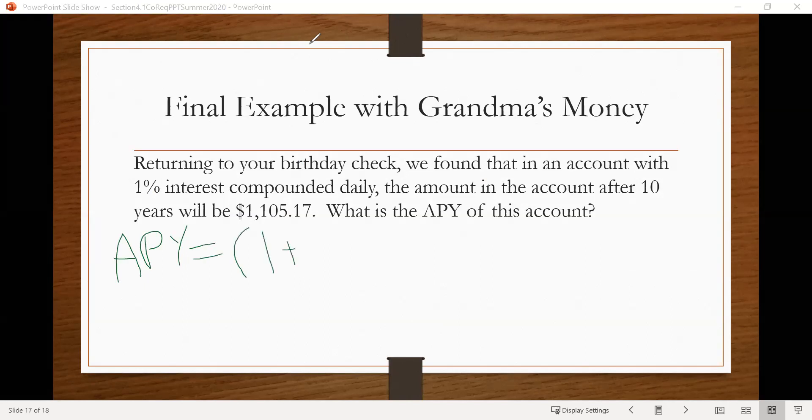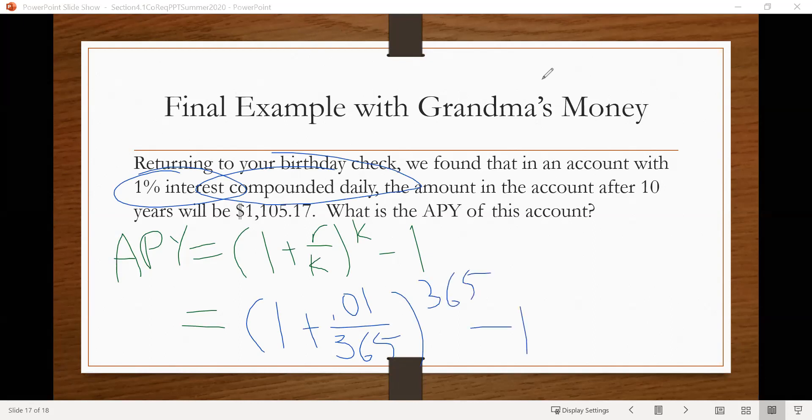So the 1 plus R over K to the Kth minus 1. Go ahead and plug in the information we have. So 1 plus our R value, so that's our interest rate, is 0.01, divided by K. We're compounding daily. So we know K is going to be 365, also over the 365th power, minus 1.